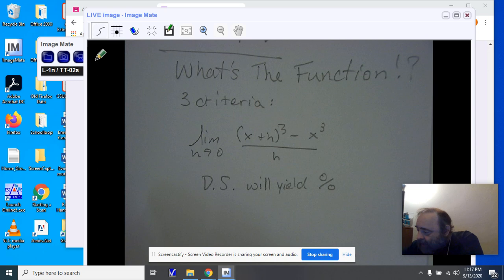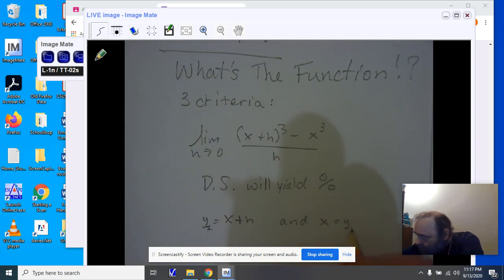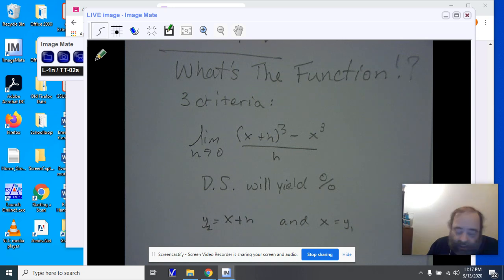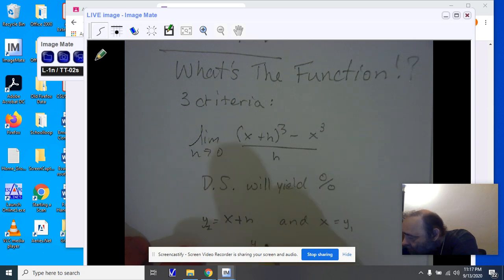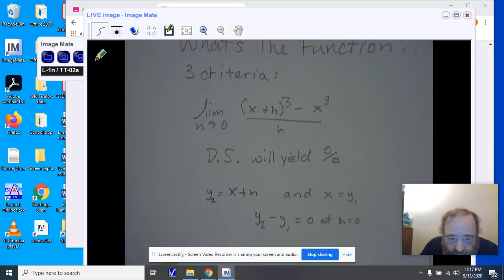The second thing you need to recognize is that there has to be two pieces in the numerator—that is x plus h and an x—and these represent a y2 and a y1. And you have to be able to yield an h when you add and subtract. So if I subtract y1 from y2, I have to yield an h. Now we should also be able to have the variables when we have a zero where y2 minus y1 will equal zero at h equals zero.